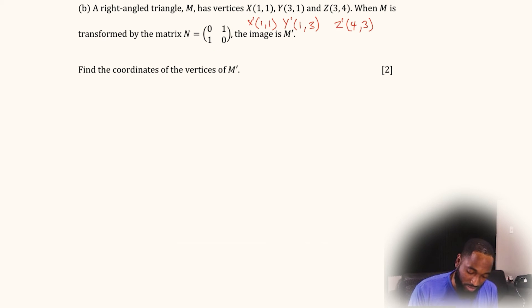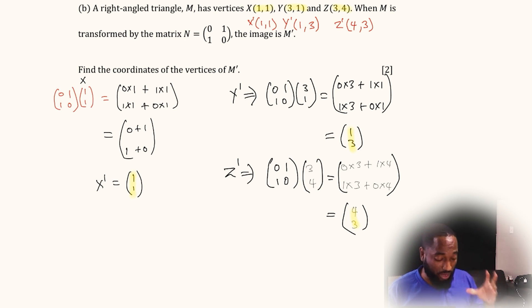That's the one we are dealing with right now. Each point is going to get a taste of this transformation matrix, called N. I'm going to put 0, 1, 1, 0 and apply it to this point. Those of you who know how to multiply 2 by 2 by 2 by 1 can proceed. For the rest of us, we do row by column. We're going to go 0 by 1 plus 1 by 1, and then 1 by 1 plus 0 by 1. This is going to be 0 plus 1, 1 plus 0, which equals 1, 1. So this was X, and this is the image of X.